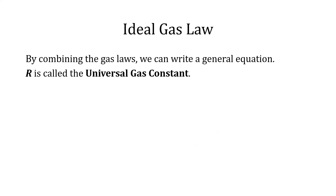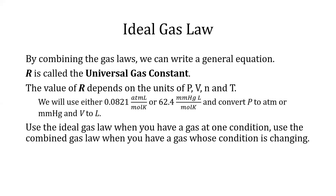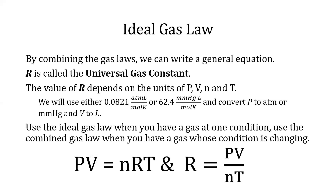By combining the gas laws, we can write a general equation. R is called the universal gas constant. The value of R depends on the units of P, V, N, and T. We will use either 0.0821 atm·L/mol·K or 62.4 mmHg·L/mol·K, converting P to atm or mmHg and V to liters. Use the ideal gas law when you have a gas at one condition, and use the combined gas law when a gas's condition is changing. The ideal gas law is PV equals NRT, where R equals PV over NT.